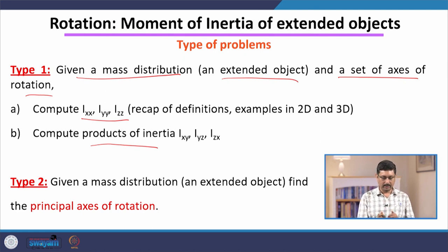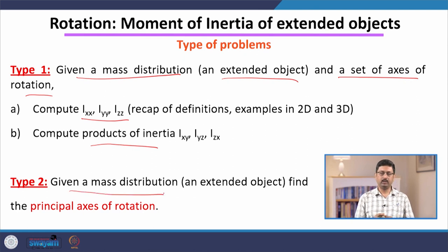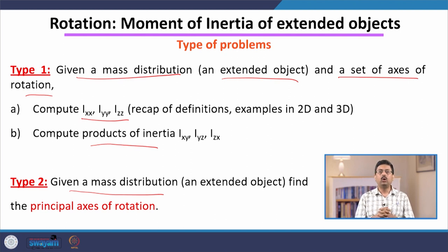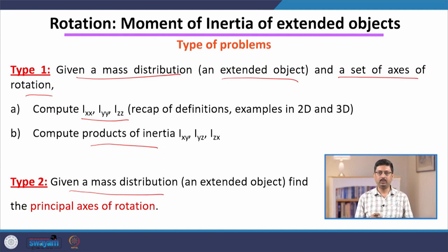The second type of problem is the following: given a mass distribution, there is a certain special set of axes of rotation called the principal axes of rotation. We are going to discuss what they are and how to find them. These are the two types of problem that will be the focus for the next few lectures on moment of inertia. Let us start with a definition.